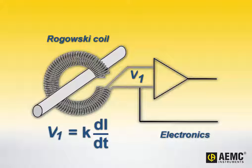To convert V1 to a linear, frequency-independent output voltage called V2, the probe's electronics remove the time frequency variable from the equation. To do this, the electronics automatically adjust the gain in accordance with the current's frequency, using the formula shown on the screen.